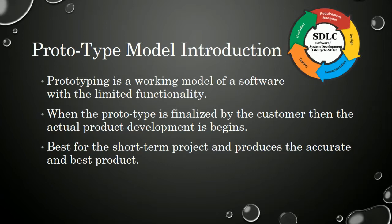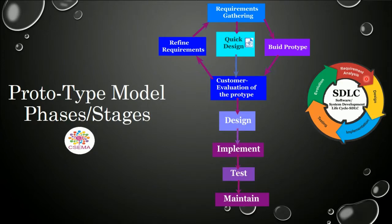Here are the stages of the prototype model. The first stage is requirement gathering, where requirements are gathered from the customer or client. Then we prepare designs, and after the design of the prototype, it will be programmed. The prototype is then submitted to the customer for evaluation.